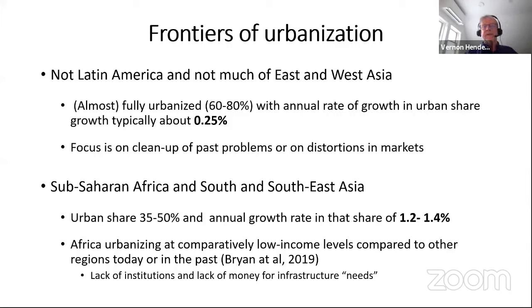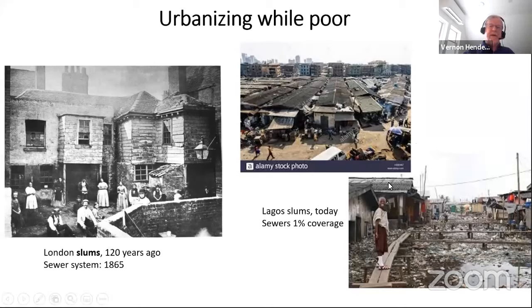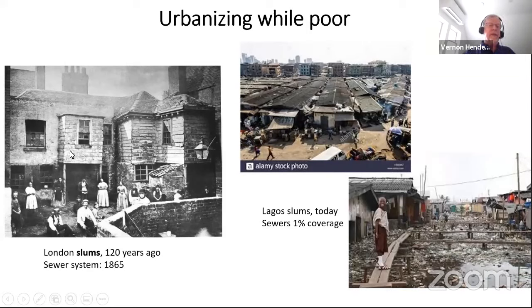What's the problem with urbanizing early? There's a lack of formal institutions that are needed and a lack of money for infrastructure. This is London — a slum about 120 years ago. London had a sewer system by 1865, well before this slum is pictured here. You can see the buildings aren't modern super-buildings, but they've got a decent roof and some type of brick structure.